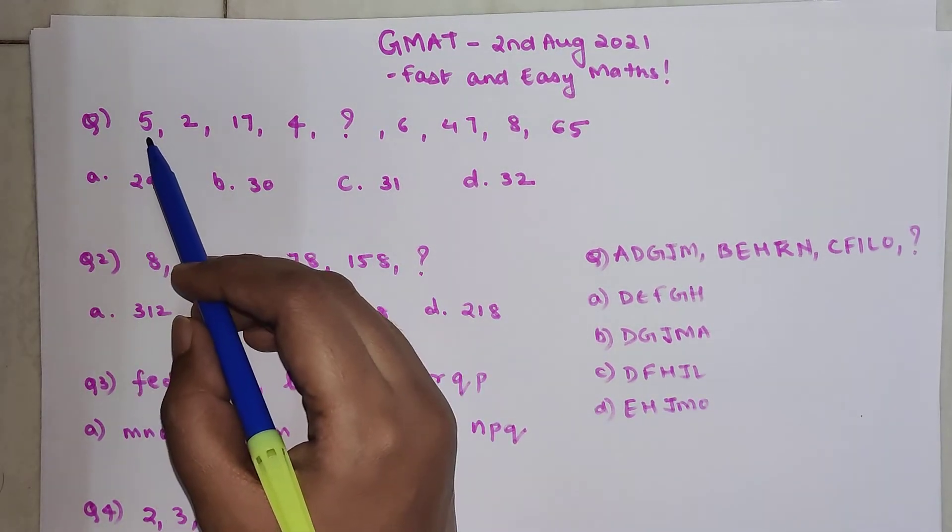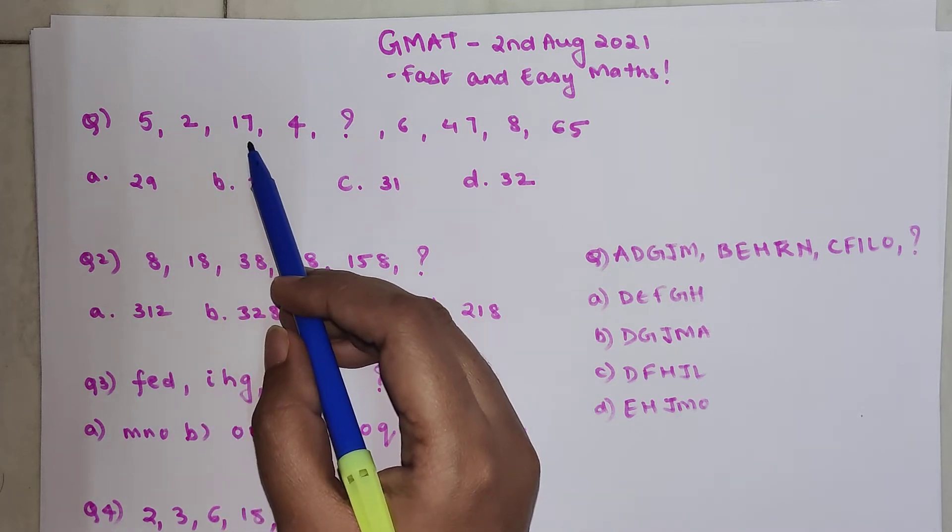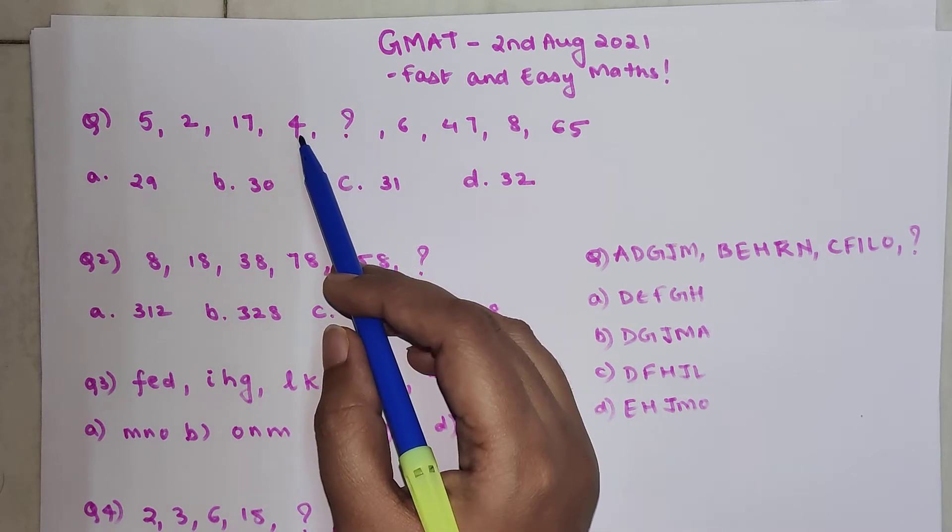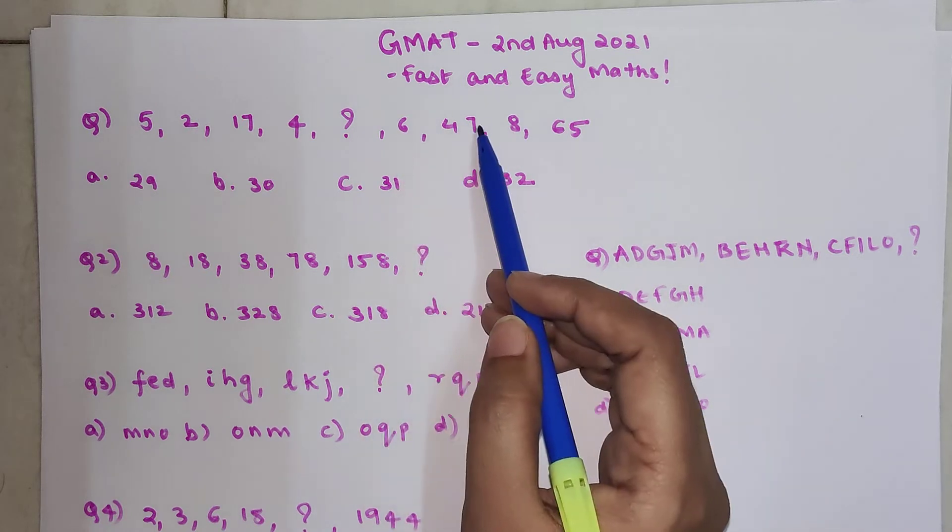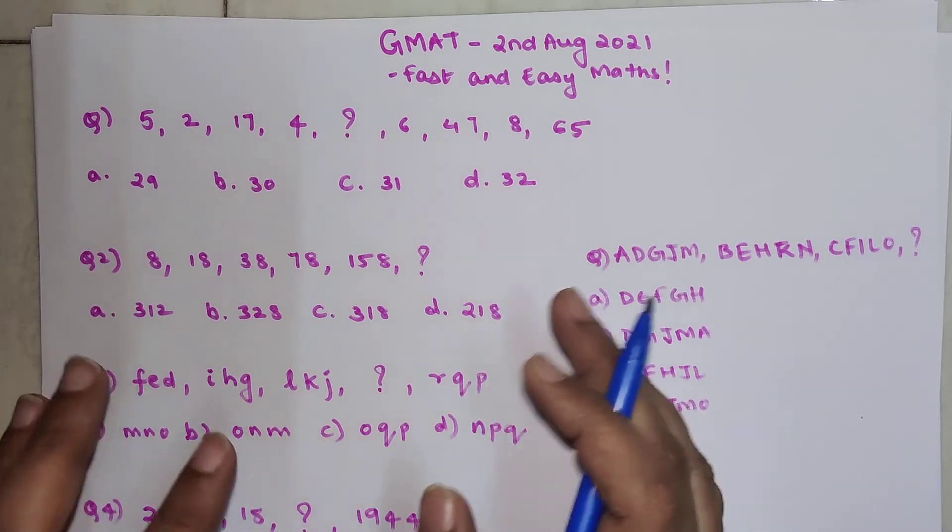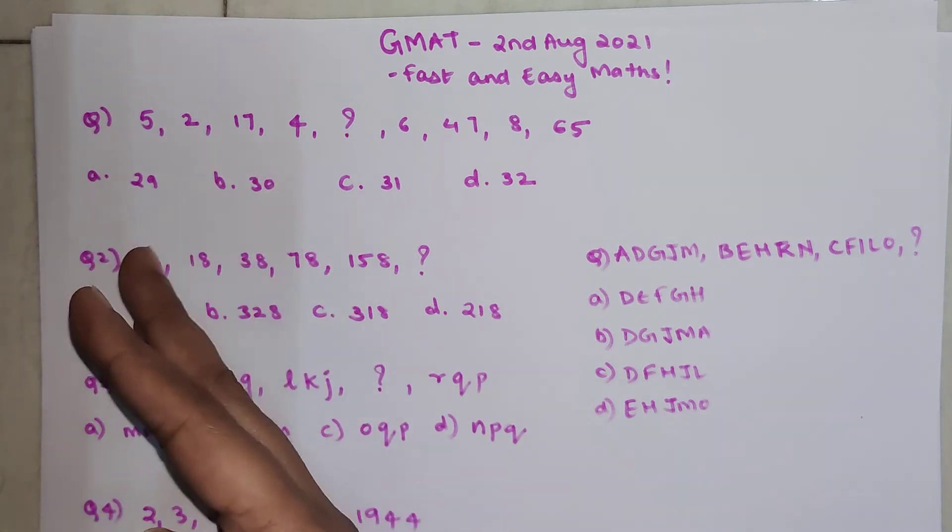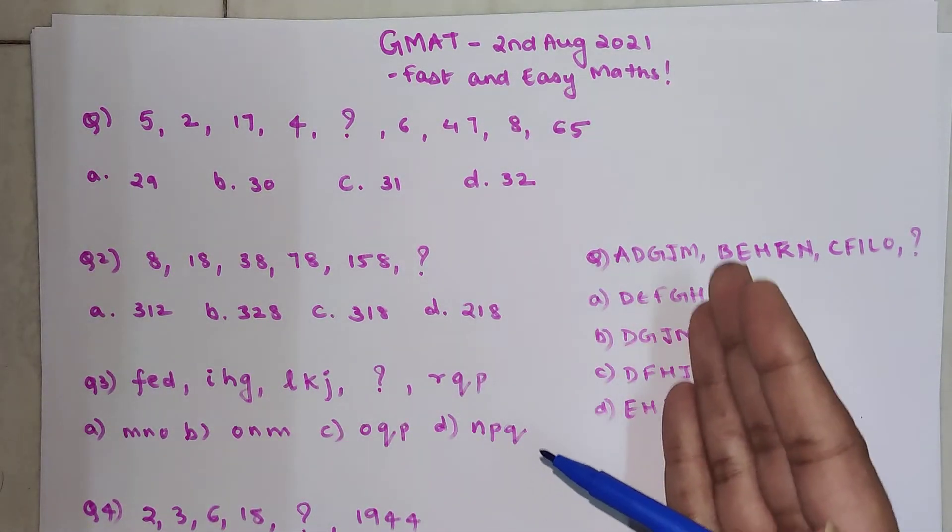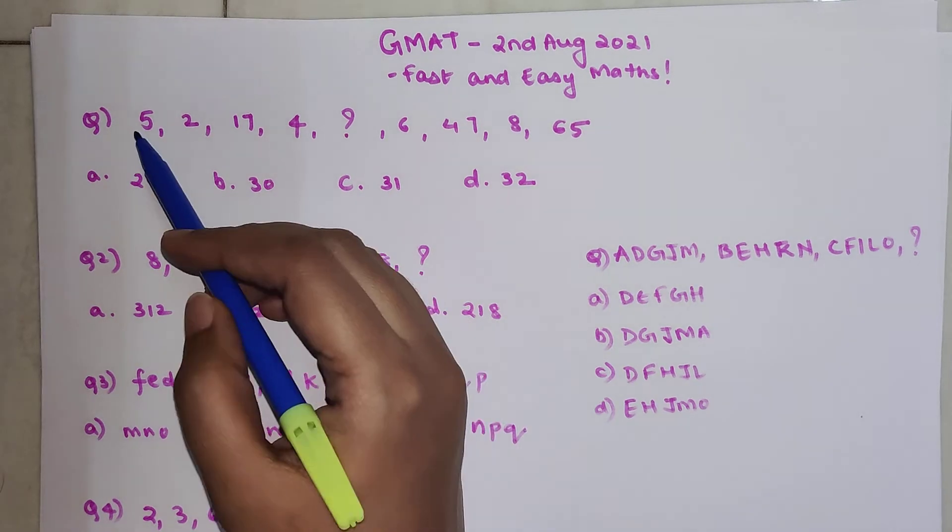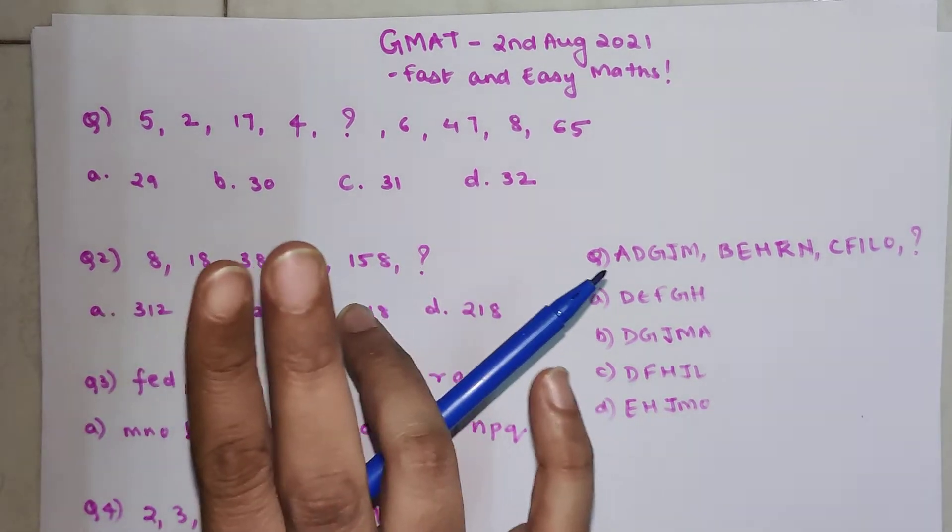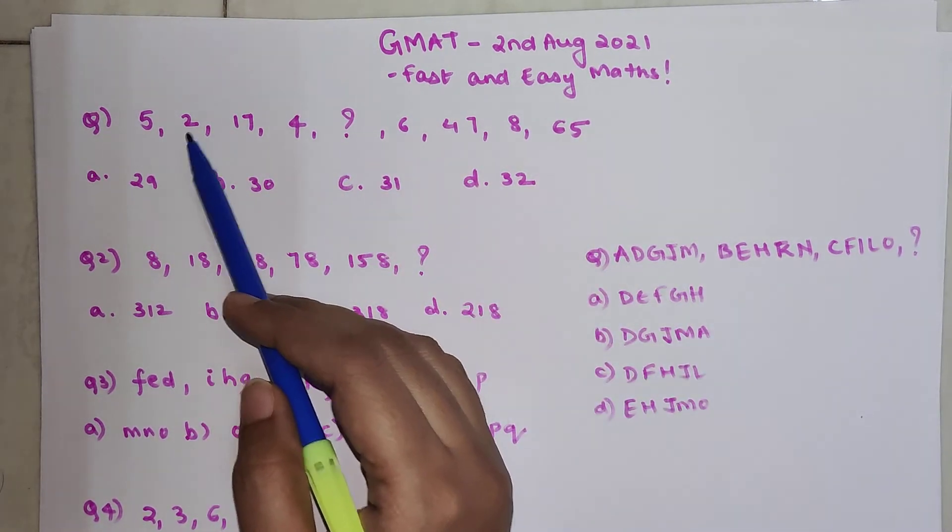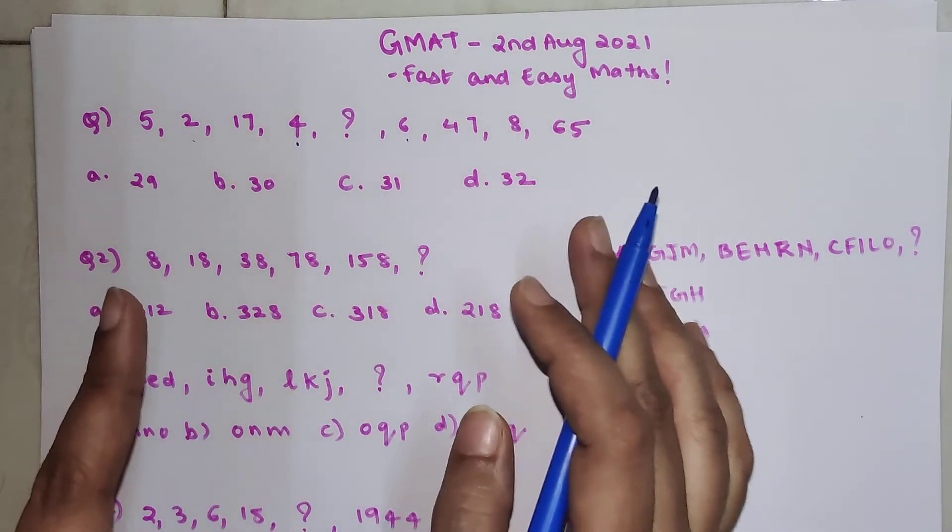For the first one, we have 5 which is followed by 2, which is then followed by 17, then followed by 4. Then we have to find out this particular number which will be followed by 6, and then followed by 47, 8, and 65. Now, whenever you have a series which is mixed, where numbers are initially decreasing then increasing then again decreasing, it might be a series of alternate digits. You might have to actually consider two sequences: one with numbers on odd places and numbers on even places.